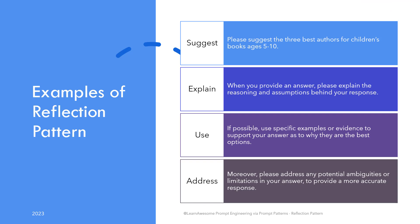The pattern can be used in a variety of examples. We already covered the hotel case. Another example: 'Please suggest the three best authors for children's books, age 5 to 10. When you provide an answer, please explain the reasoning and assumptions behind your response. If possible, use specific examples or evidence to support your answer as to why they are the best options. Moreover, please address any potential ambiguities or limitations in your answer to provide a more accurate response.'